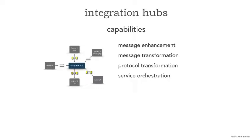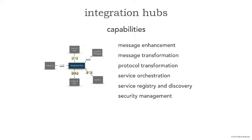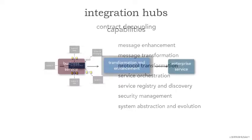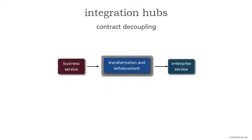The integration hub can handle service orchestration so that if system A needs to communicate with system E and B, that orchestration can be handled through the integration hub. It can also handle registry and discovery of services, so that system A doesn't need to be concerned about where a particular order is going to be placed — it simply sends an order into the integration hub and that can orchestrate and discover available services. Security can also be handled through the integration hub, as well as overall system abstraction and evolution. Adding another system and tying it to the integration hub does not impact other systems.